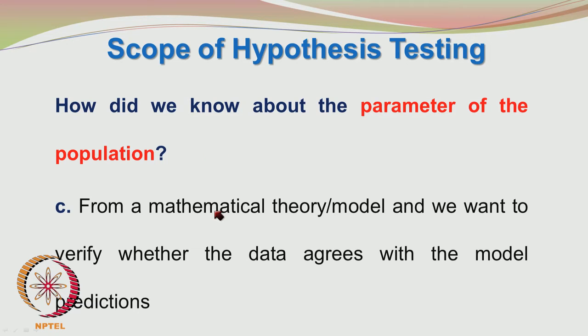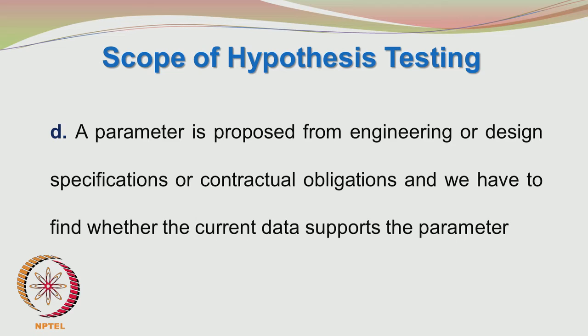A parameter may also be set based on a mathematical theory or model, and we want to verify whether the data agrees with the model predictions. Alternatively, a parameter may be proposed from engineering or design specifications or contractual obligations, and we have to find whether the current data supports it. For example, the XYZ company guaranteed 2.3 gigawatts from its nuclear reactors, and we monitor performance to check whether the mean power output is actually 2.3 gigawatts or lower.